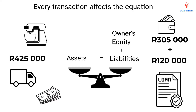Let's recap. Assets are what the business owns. Liabilities are what the business owes. And owner's equity is the owner's share after debts are paid. Remember, the accounting equation must always stay balanced.